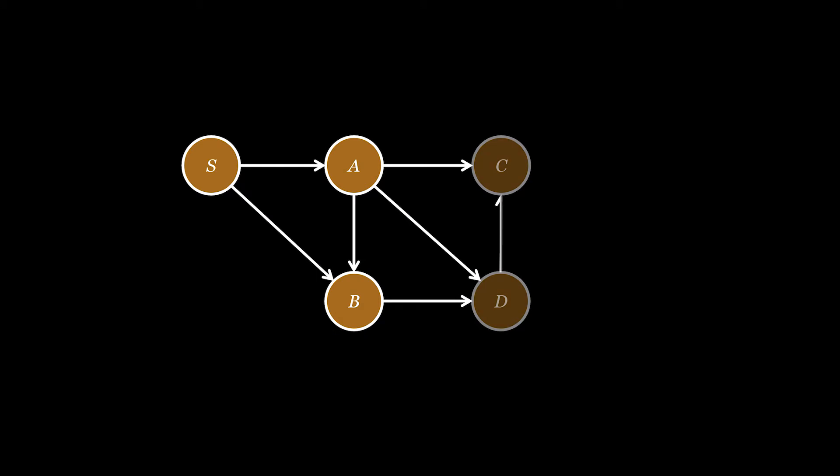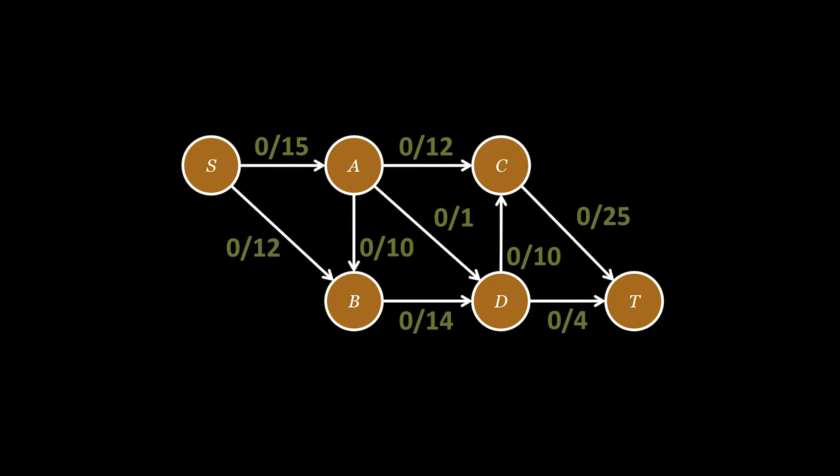As usual, to visualize this let's take a water pipe network represented by the following graph. Each pipe or edge has a certain maximum capacity of water it can transfer at the same time. For this algorithm we're going to find the maximum amount of water we can flow from the source to the sink at the same time, aka the max flow of the graph.